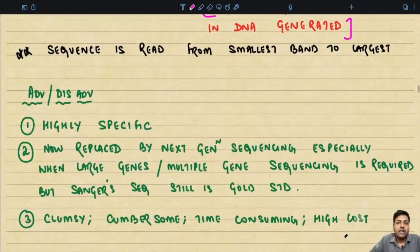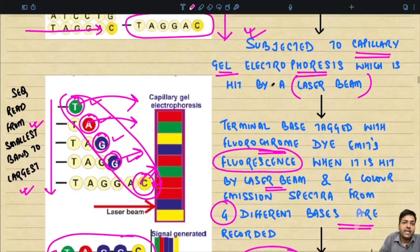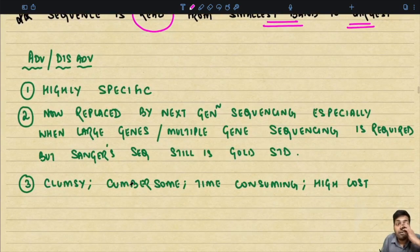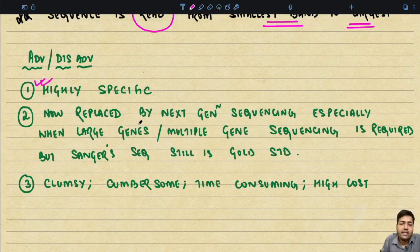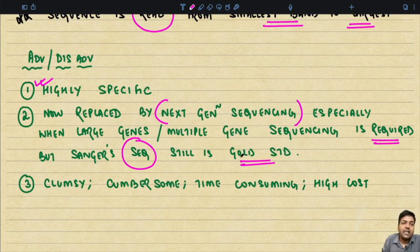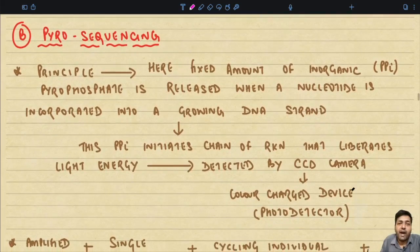The sequence is read from the smallest band to the largest band. Advantages and disadvantages of Sanger sequencing: it is highly specific and is still considered the gold standard sequencing method. However, it has been largely replaced by next generation sequencing especially when large genes or multiple gene sequencing is required. Drawbacks include that it is a cumbersome, time-consuming process with very high cost.